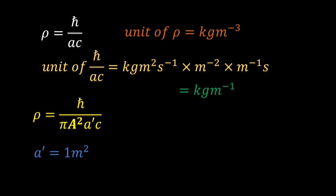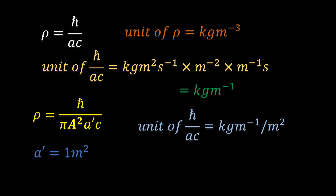So, our final unit of the right-hand side becomes kilograms per meter divided by meters squared, and this gives kilograms per meters cubed. Hence, the equation is homogeneous.